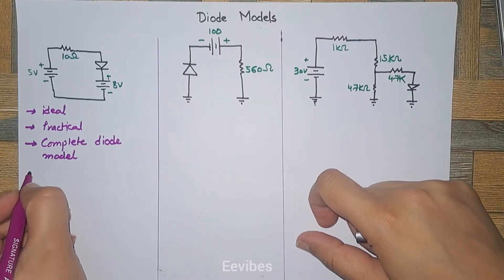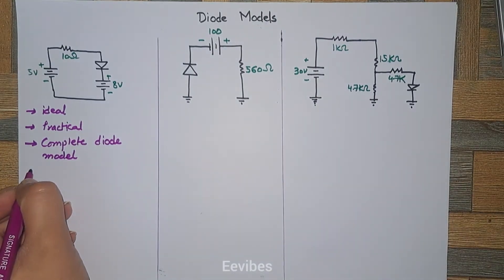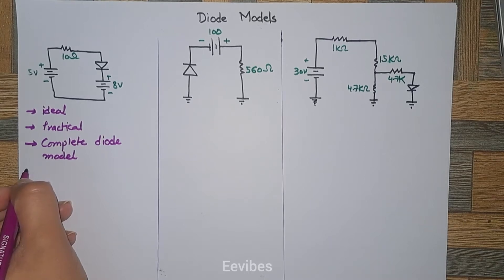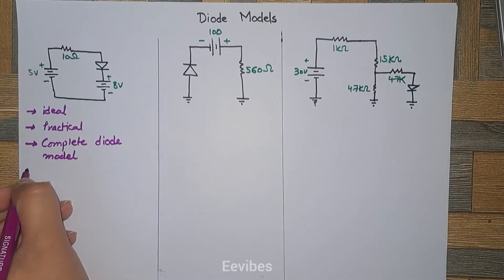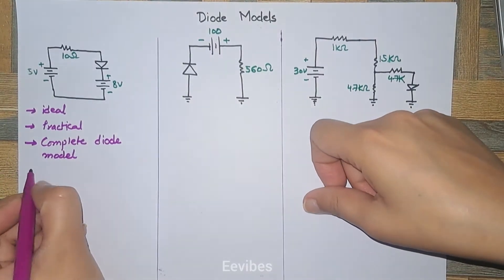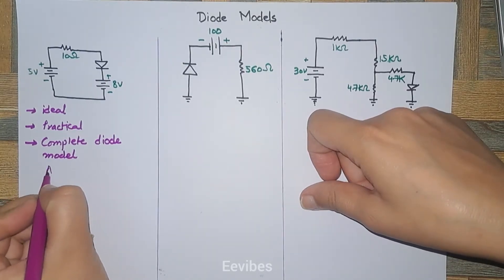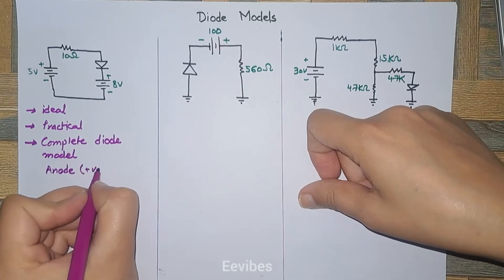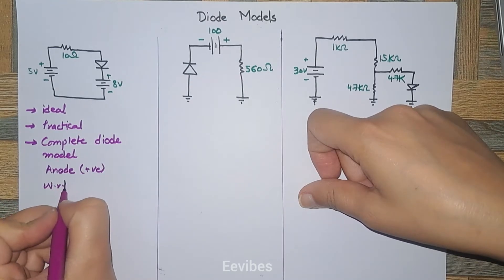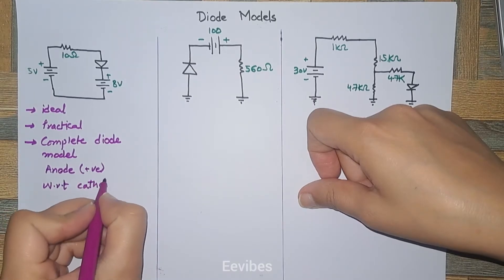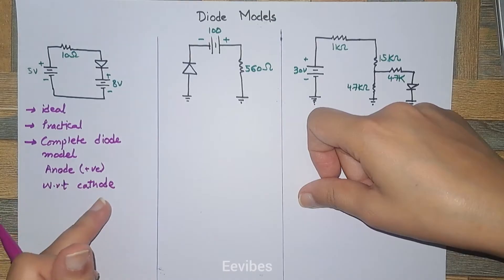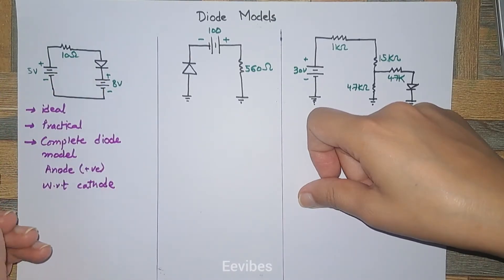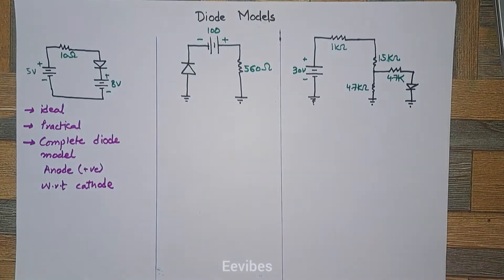We are going to analyze three different circuits and see how the diode behaves. The first question is: which of the diodes in this figure is forward biased or reverse biased? The simple condition for forward biasing is that the anode should be more positive with respect to the cathode. Whenever you have such a condition, that particular diode will be forward biased.